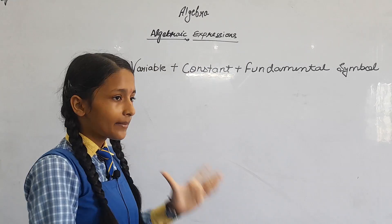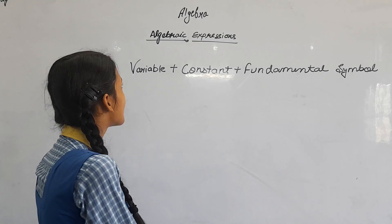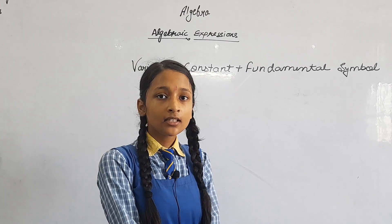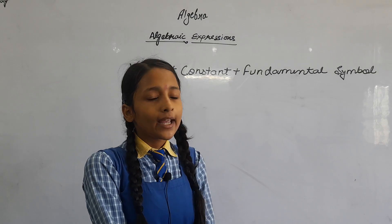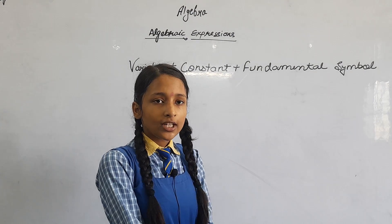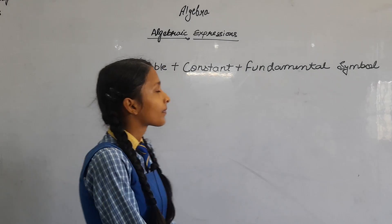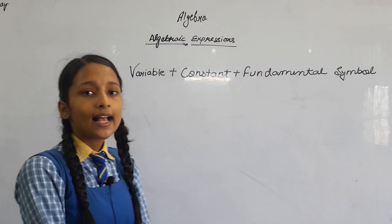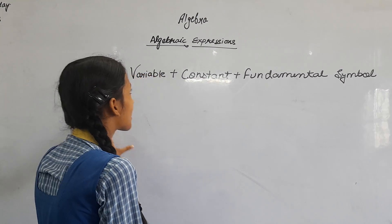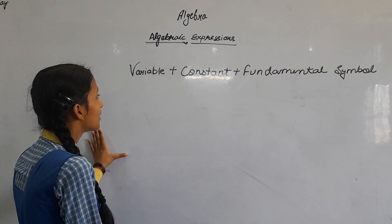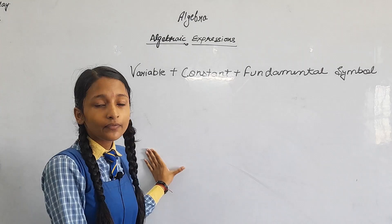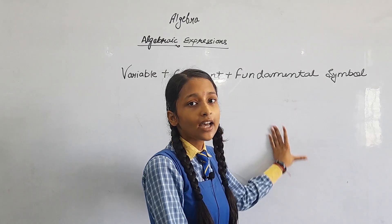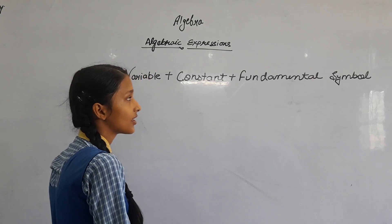To read about Algebraic Expression, we first read about Algebra. Algebra is the branch of Mathematics. The combination of variable and constant is known as Algebra. Algebraic Expression definition is the combination of variable and constant with fundamental symbols, which is known as Algebraic Expression.